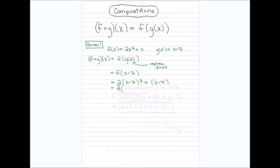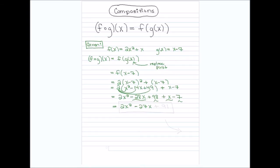First, I'm going to square (X minus seven). If you FOIL that correctly, you get X squared minus 14X plus 49. The two is still out in front, and I distribute it to get two X squared minus 28X plus 98. Then I have the (X minus seven) at the end. Combining like terms: negative 28X plus X gives minus 27X, and 98 minus seven gives 91. So the final answer is two X squared minus 27X plus 91.